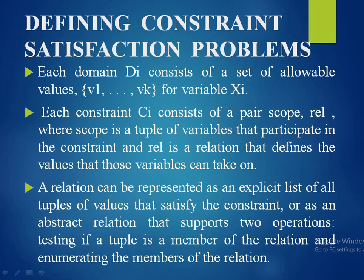Each domain Di consists of a set of allowable values V1, V2 up to Vk for variable Xi. Each constraint Ci consists of a pair of scope and relation, where scope is a tuple of variables that participate in the constraint, and the relation defines the values those variables can take on. A relation can be represented as an explicit list of all tuples of values that satisfy the constraint, or as an abstract relation supporting two operations: testing if a tuple is a member of the relation, and enumerating the members.